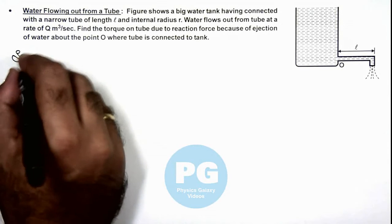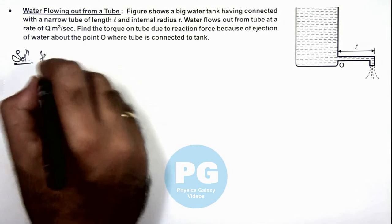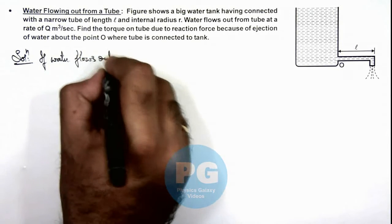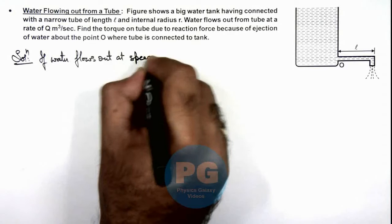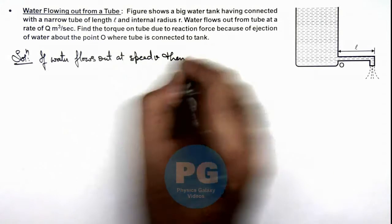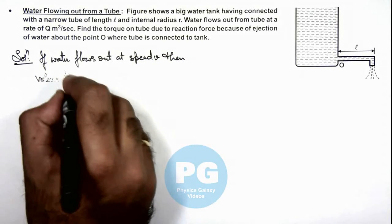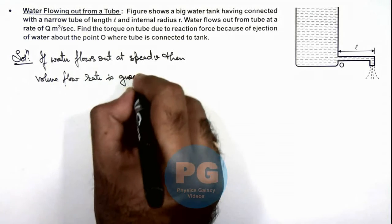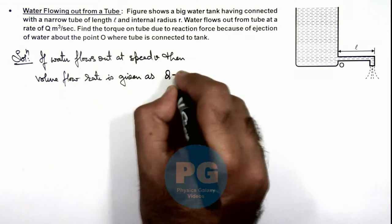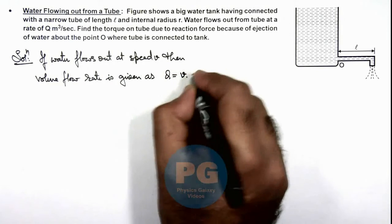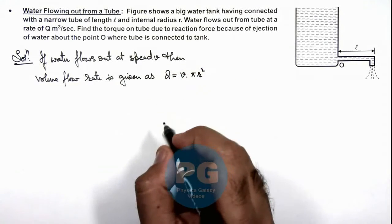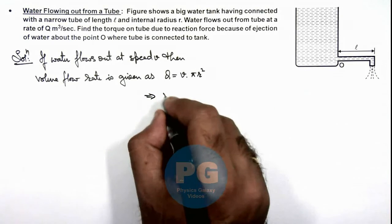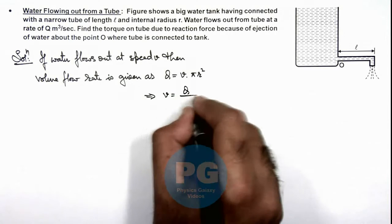In solution, first we can calculate: if water flows out at speed v, then volume flow rate is given as Q = v × πr², where πr² is the cross-sectional area of the opening through which the liquid is coming out. This gives us the flow velocity v as Q/πr².